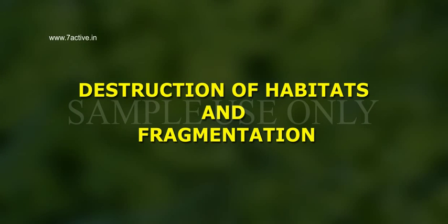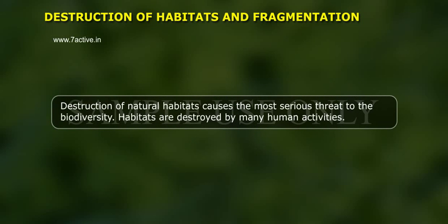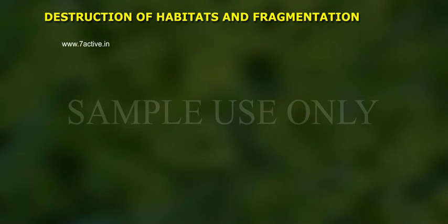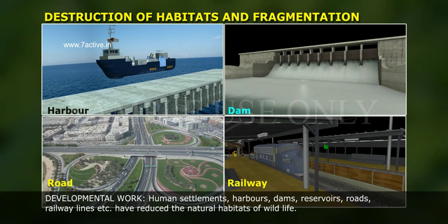Destruction of habitats and fragmentation: destruction of natural habitats causes the most serious threat to biodiversity. Habitats are destroyed by many human activities — developmental work, human settlements, harbors, dams, reservoirs, roads, railway lines, etc. have reduced the natural habitats of wildlife.